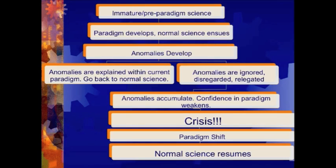This flowchart version is a little bit more detailed. Before we have any real scientific paradigm, we're in an immature or pre-paradigm science, just stumbling around trying to find something to hold on to. Gradually a paradigm develops, focusing scientists' careers, and normal science develops. Over time anomalies develop and you split into a fork: either the anomalies get explained away within the current paradigm and you go back to doing normal science, or they're ignored and begin to accumulate, confidence in the current paradigm weakens, we shift into a crisis state, which moves into a paradigm shift, and then normal science starts up again.